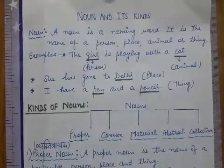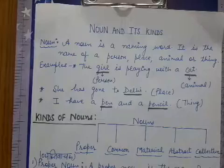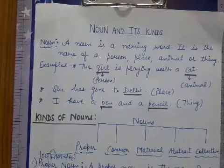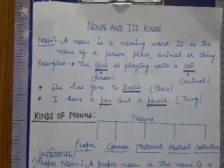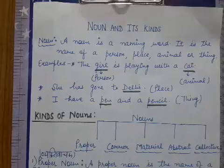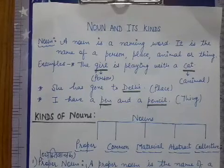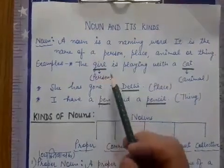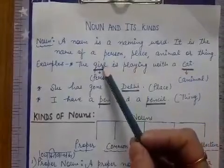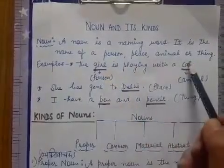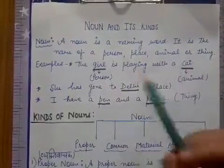What is noun? You just have to understand noun's name. Any person, animal, place, or thing's name is a noun. For example: 'The girl is playing with a cat.' Here, girl is a person and cat is an animal — so both are nouns. Next sentence: 'She has gone to Delhi.' Here, Delhi is the name of a place, so it is also a noun.